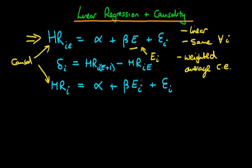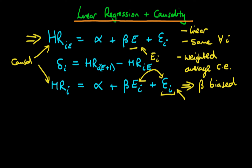The problem with this observed model is that the level of exercise an individual chooses is not necessarily independent of all other factors determining their resting heart rate. There is likely correlation between E_I and epsilon_I. Because of that, if we just estimated this model, beta would be a biased estimate of the causal effect. Within epsilon_I, we have all factors affecting potential resting heart rate, which generally won't be orthogonal to the exercise level an individual actually chooses.